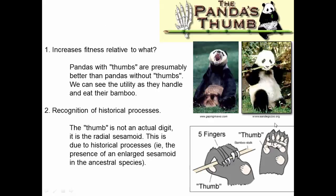Here's an example from the paper you read previously — the panda. Pandas are carnivores, as you can see from their teeth, although they eat bamboo. You can see the bones of the hand: five real digits, and then a sixth pseudo-digit they use to help hold onto bamboo as they eat. If we think about the adaptation of that sixth digit — increases fitness relative to what? Pandas with that thumb are presumably better than pandas that don't have it. We can watch a panda eat and see that a five-fingered panda without the pseudo-thumb probably couldn't do as well, so their fitness is increased relative to pandas without that trait.